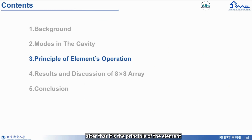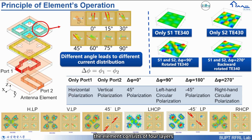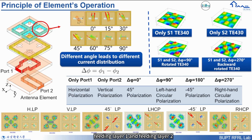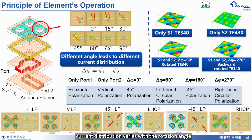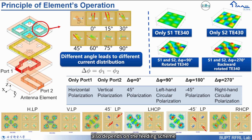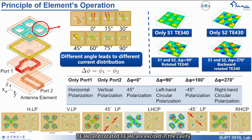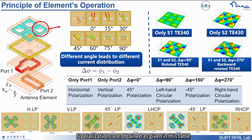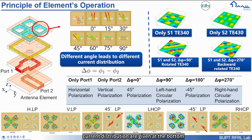Next is the principle of the element. The element consists of four layers including the radiation layer, high order mode layer, feeding layer one, and feeding layer two. In the radiation layer, the current distribution varies with the rotation angle, and the mode distribution also depends on the feeding scheme. TE-340 and rotated TE-340 are excited in the cavity as given in the top right. Using different feeding schemes, six polarizations are obtained as given in this table, and the electric and current distributions are given at the bottom.